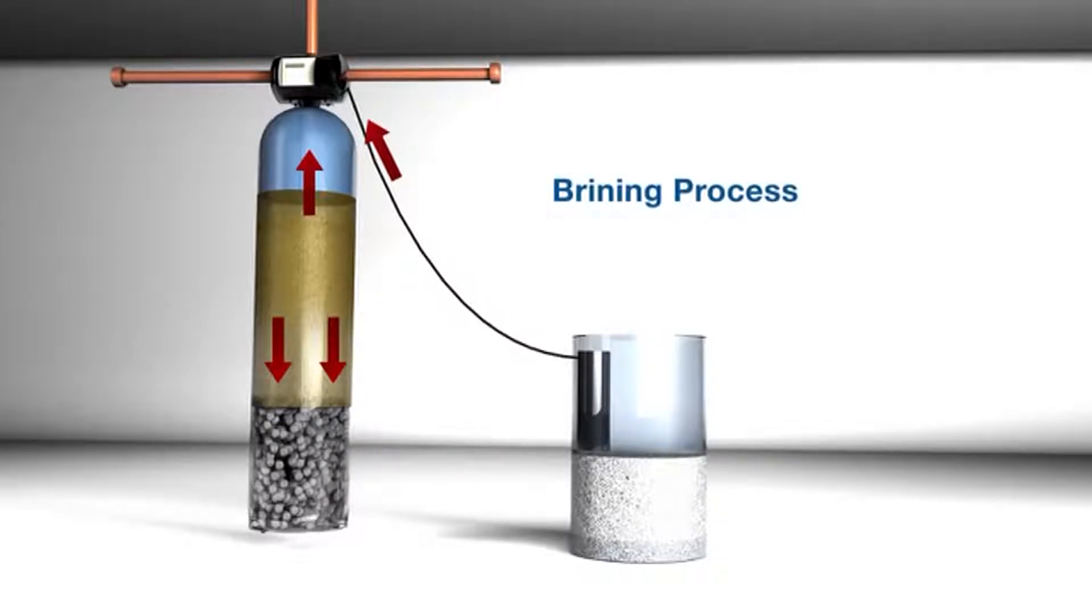This process takes anywhere from 49 to 84 minutes, depending on the size of the unit. During this process, the amount of water going to drain is about a quarter gallon per minute. Now, with the brine tank full of dissolved salt water, it's time for stage 3, the fill rinse.